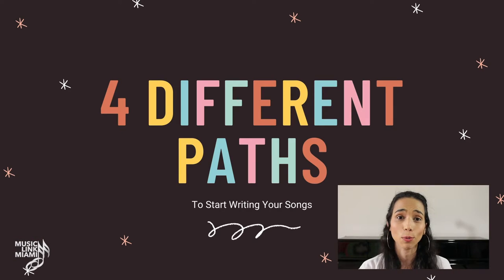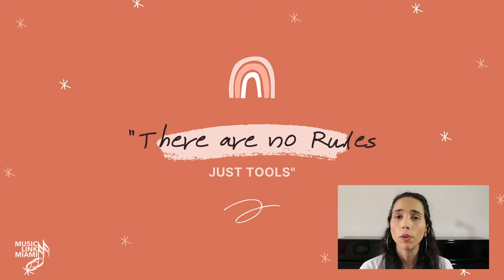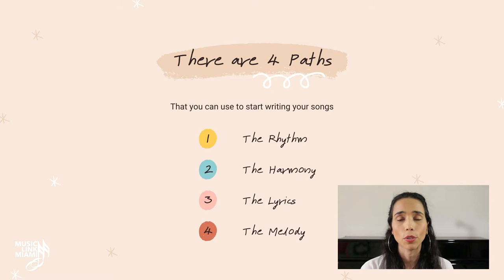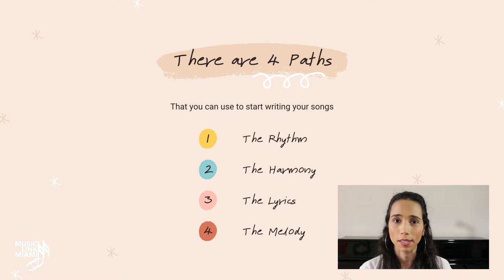In this video I will show you four different paths that you can use to start writing your own songs. Remember that every path is different for every composer and there are no rules, only tools that will allow you to overcome the creative block. The four main paths are rhythm, harmony, lyrics, and melody. Let's talk about the rhythm.